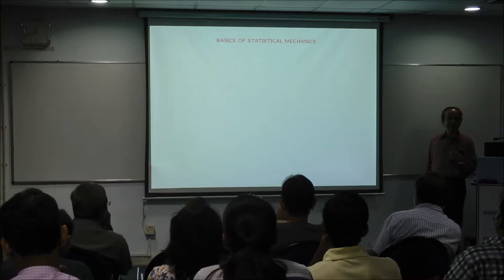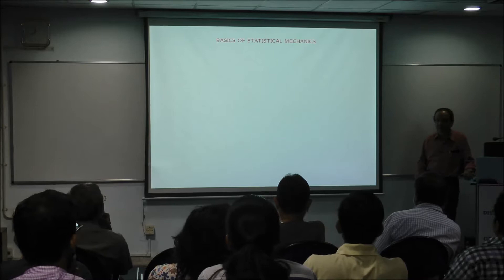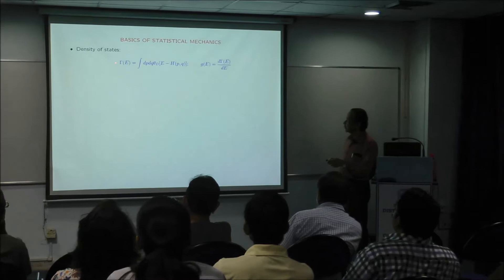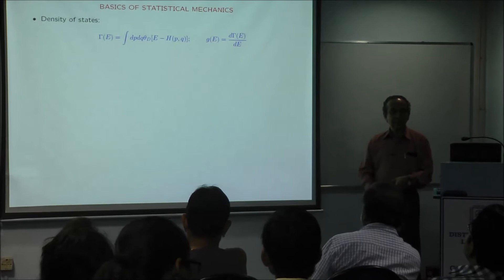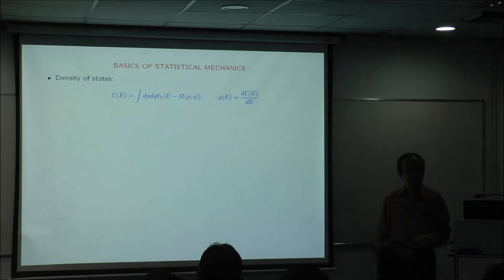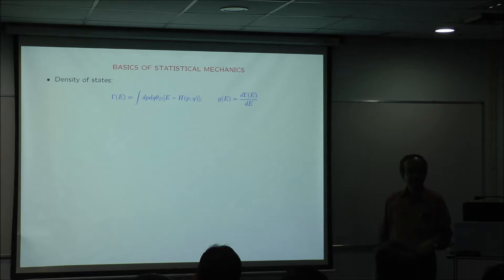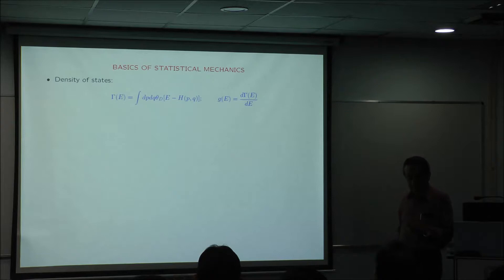Now let us start with the basics of statistical mechanics before we start applying it to the gravitating system. What I would like to start with is what is called the density of states. You have a system with a Hamiltonian which depends on P and Q, and you look at the boundary in phase space corresponding to a given energy E. Assume that the Hamiltonian is bounded from below for the moment, so this energy is positive. You put a theta function here which tells you that you are looking at the volume of the phase space below a particular energy surface. At any stage, if something is not clear, put up your hand and stop.